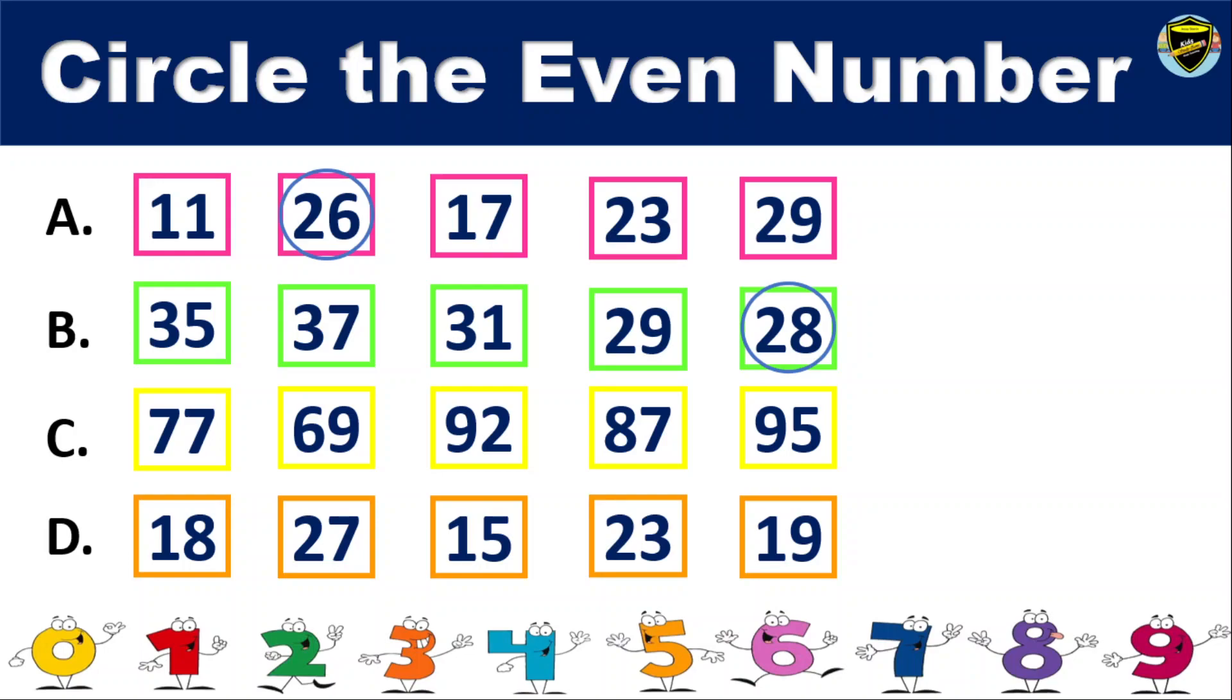C. 77, 69, 92, 87, 95. The even number is 92.